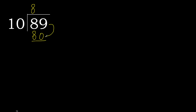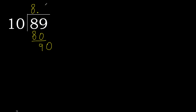89 minus 80 is 9. Next, there is no number, therefore complete — always complete with 0, here with point 0. 90, 10, multiply by 9: 90 — is not greater.